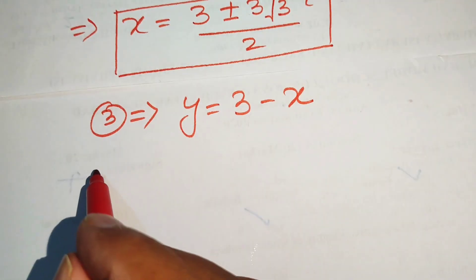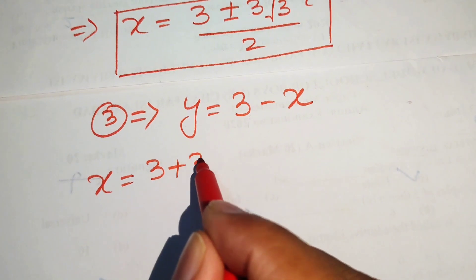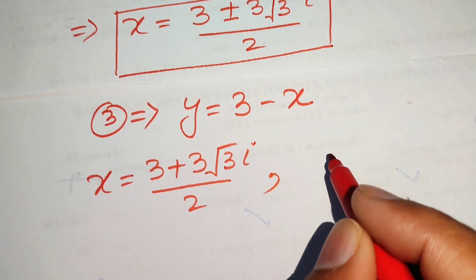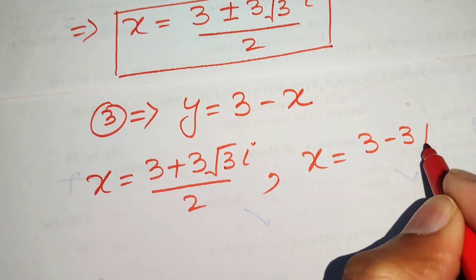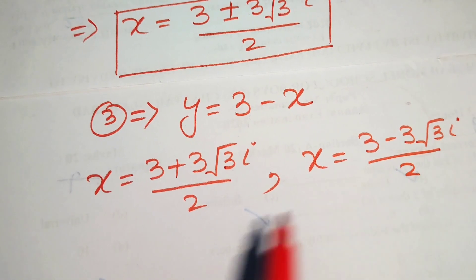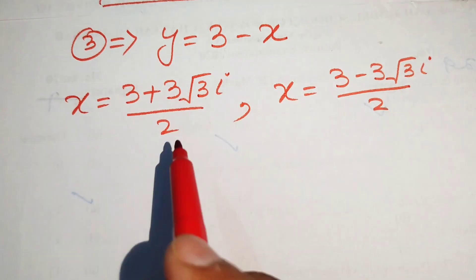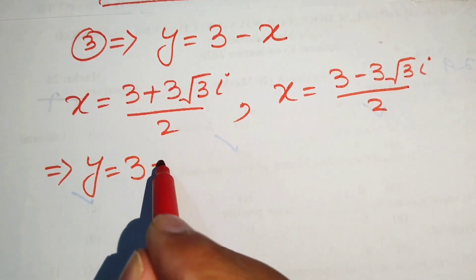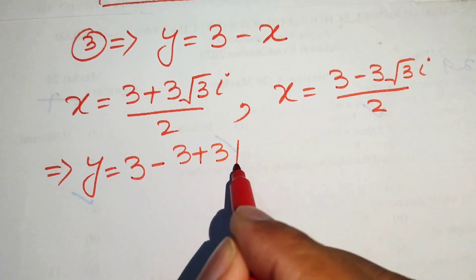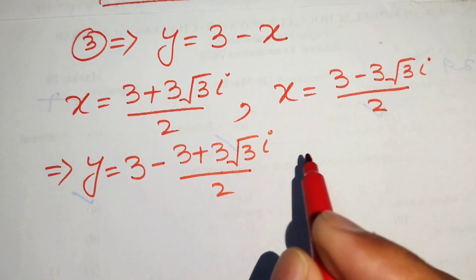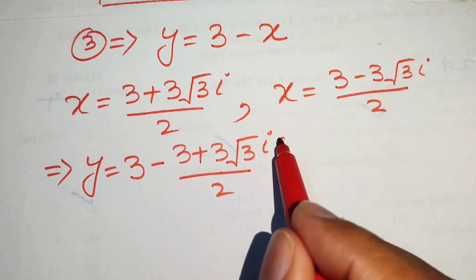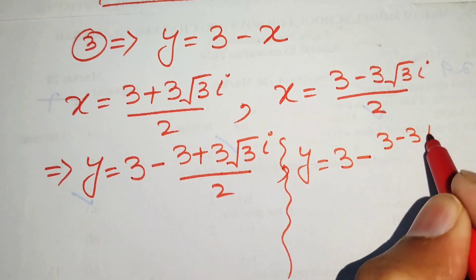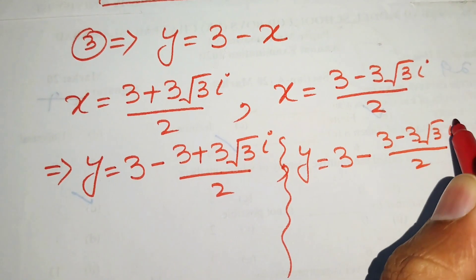We substitute both values of x into y equals 3 minus x. For x equals (3 plus 3 root 3 iota) divided by 2, we get y equals 3 minus (3 plus 3 root 3 iota) divided by 2. For x equals (3 minus 3 root 3 iota) divided by 2, we get y equals 3 minus (3 minus 3 root 3 iota) divided by 2.